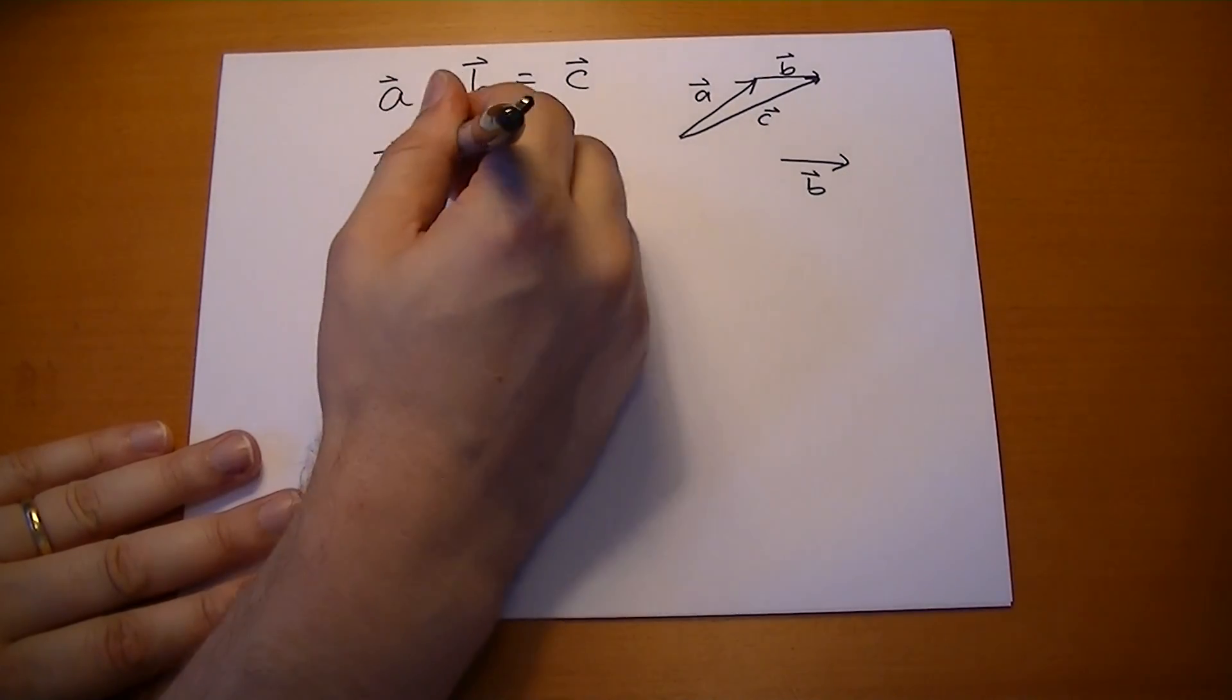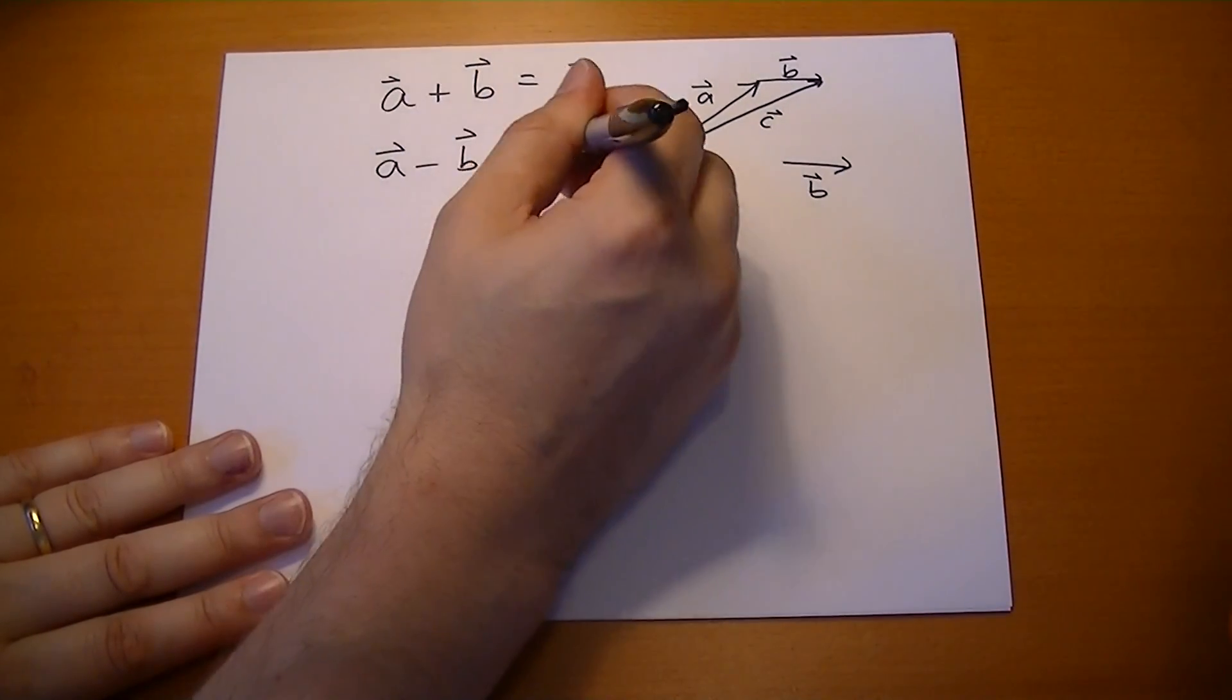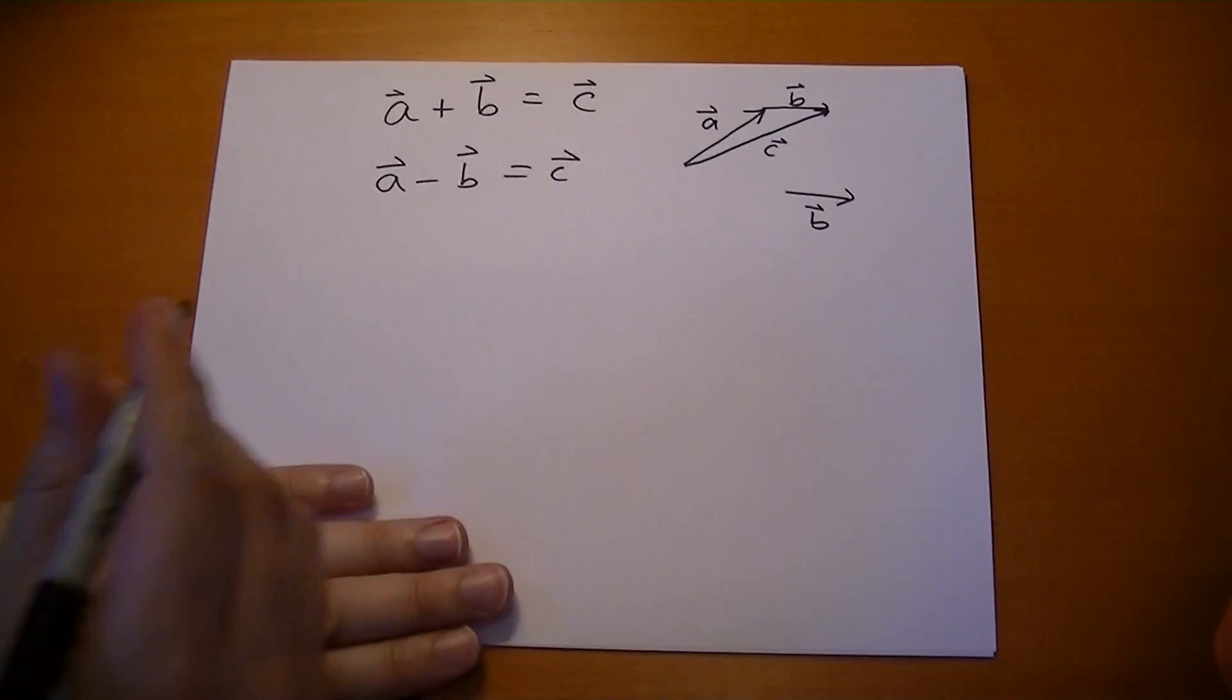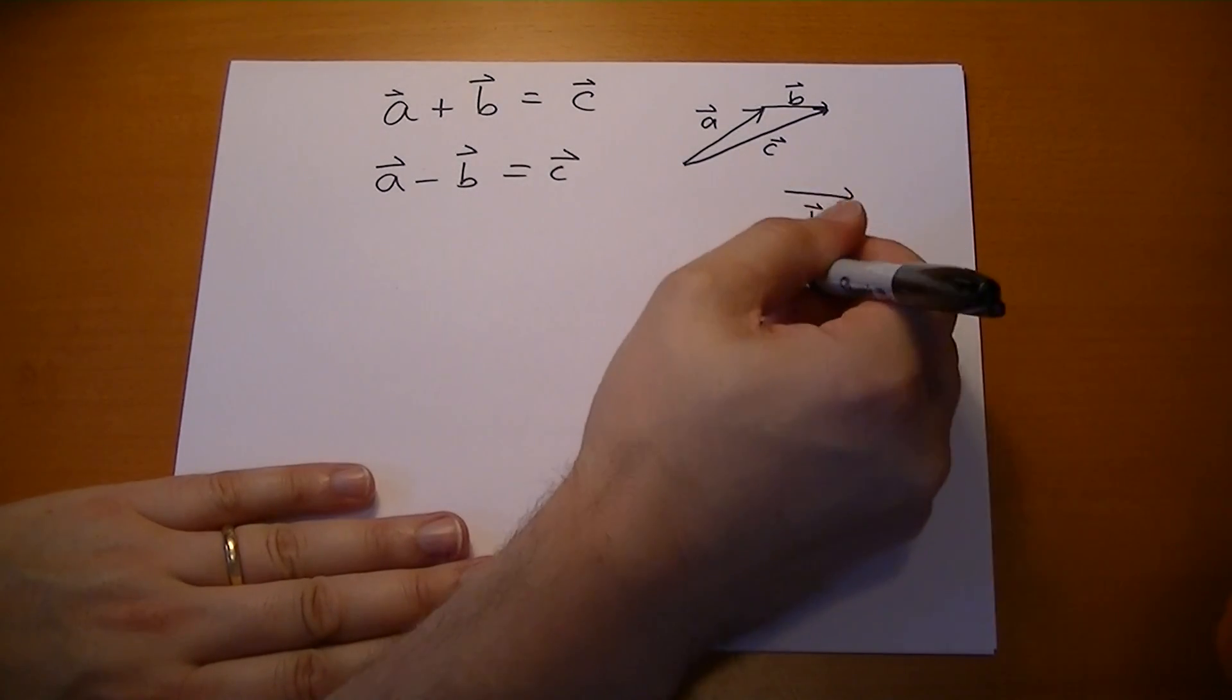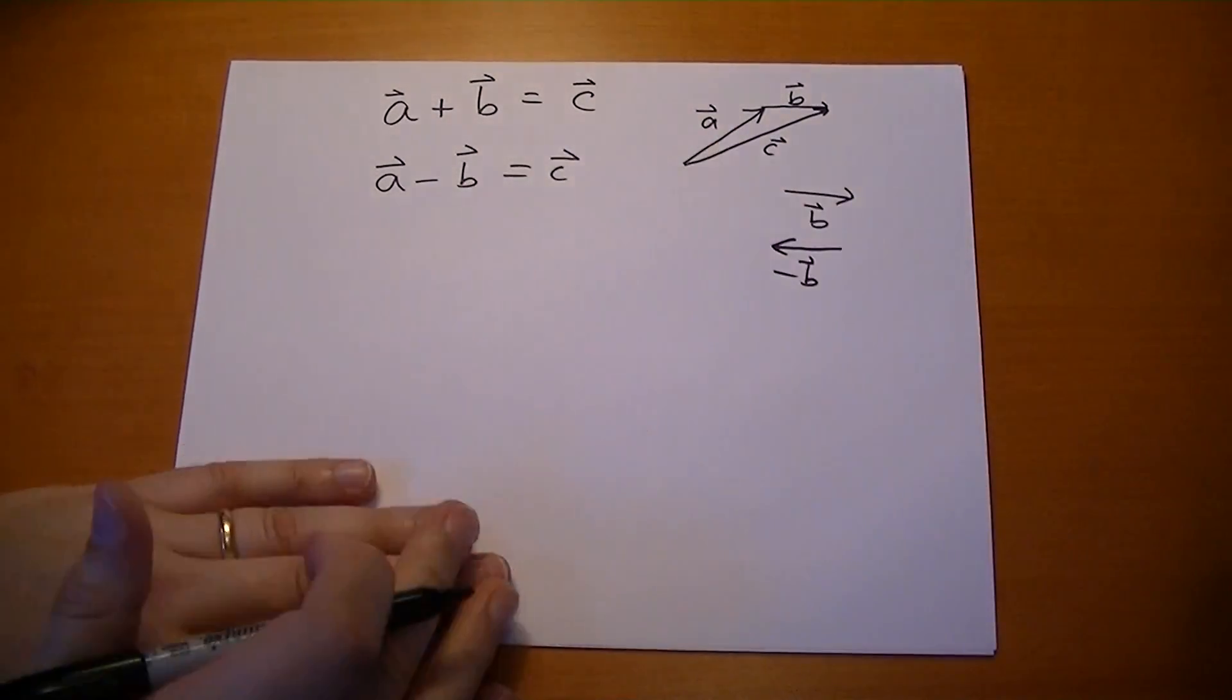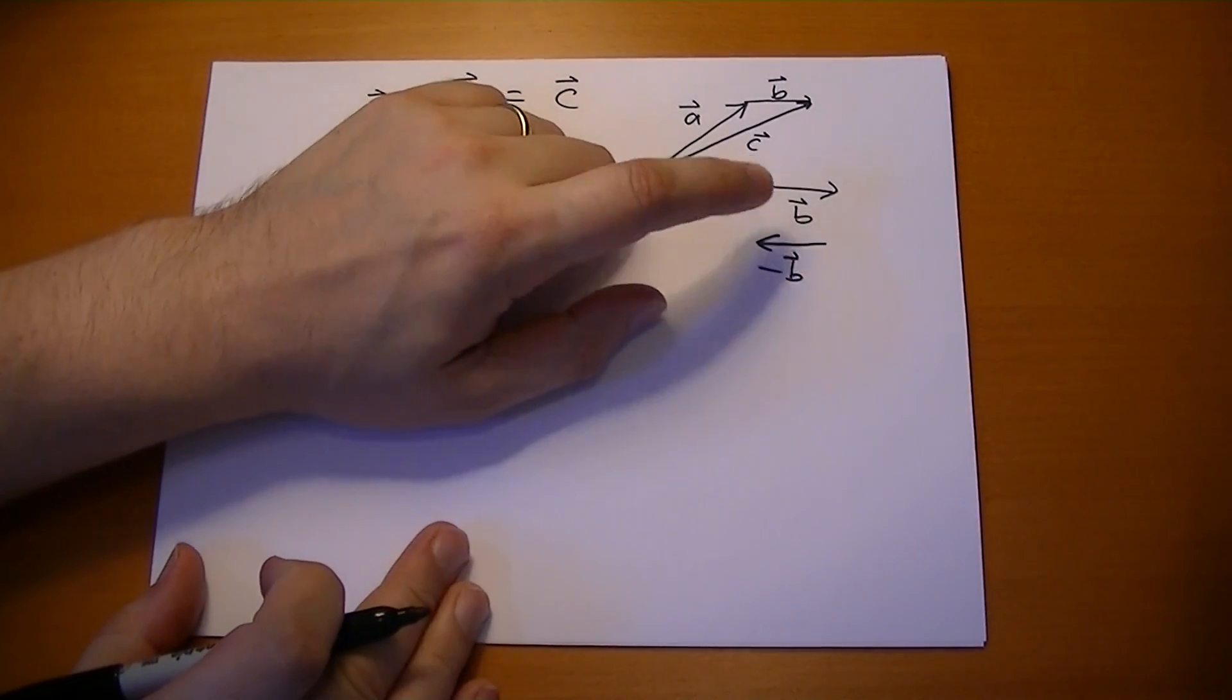Vector subtraction is the same as adding the negative. So what do we mean by a negative vector? Well, that would be the vector that cancels the vector so you get zero as a result.